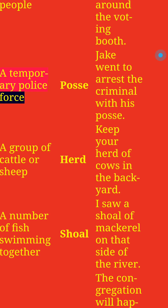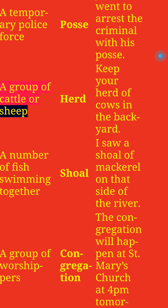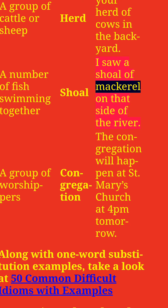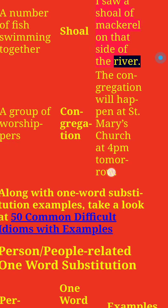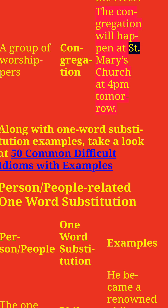A temporary police force: Posse. Jake went to arrest the criminal with his posse. A group of cattle or sheep: Herd. Keep your herd of cows in the backyard. A number of fish swimming together: Shoal. I saw a shoal of mackerel on that side of the river. A group of worshippers: Congregation. The congregation will happen at St. Mary's Church at 4pm tomorrow.